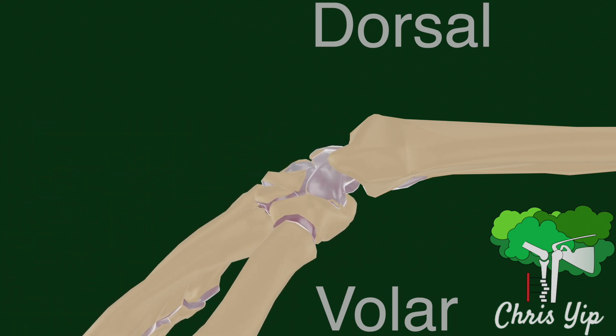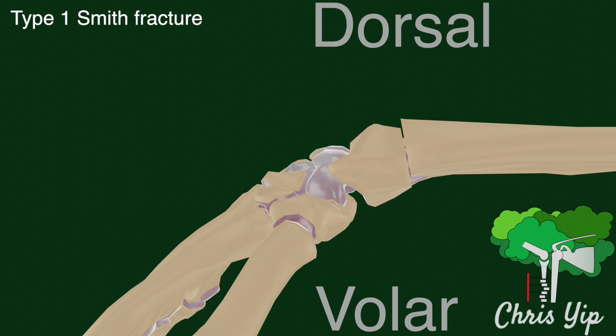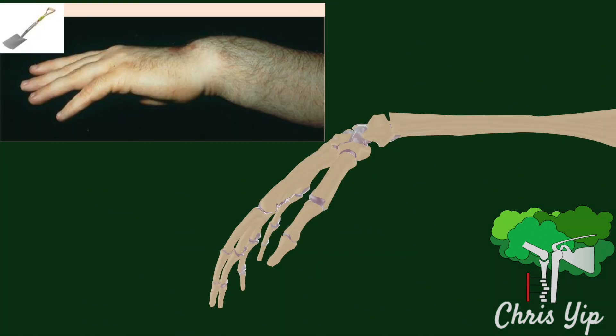In the Thomas classification of Smith fractures, a type 1 Smith fracture is an extra-articular fracture with a palmar angulation and displacement of the distal fragment. This gives rise to a garden spade appearance on x-rays.